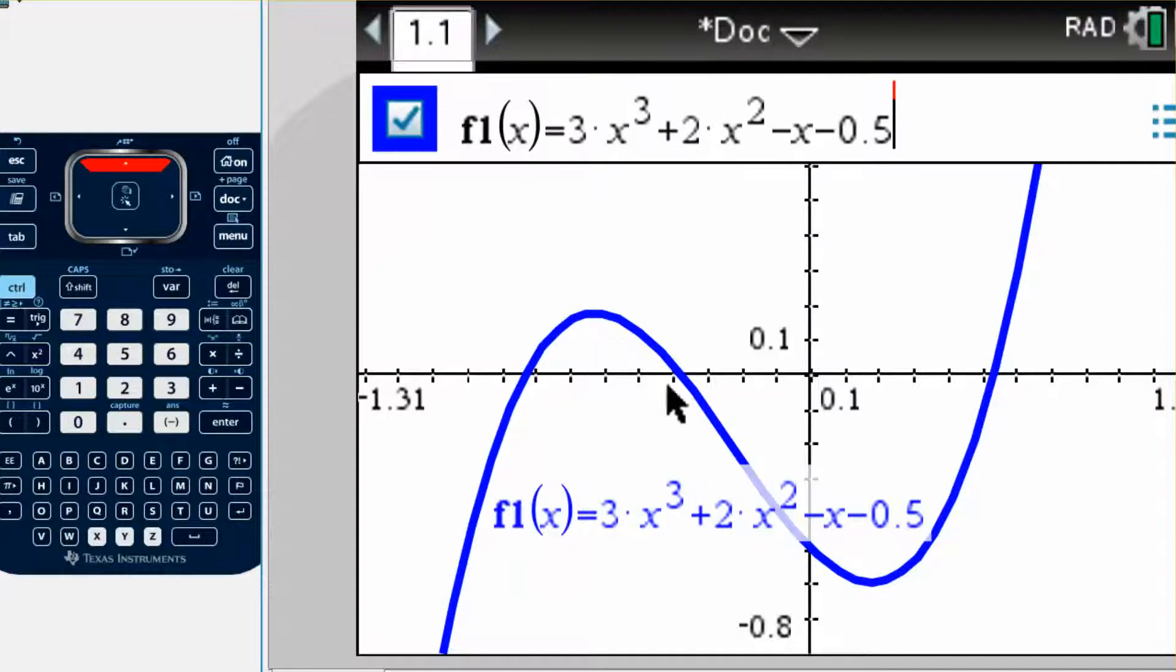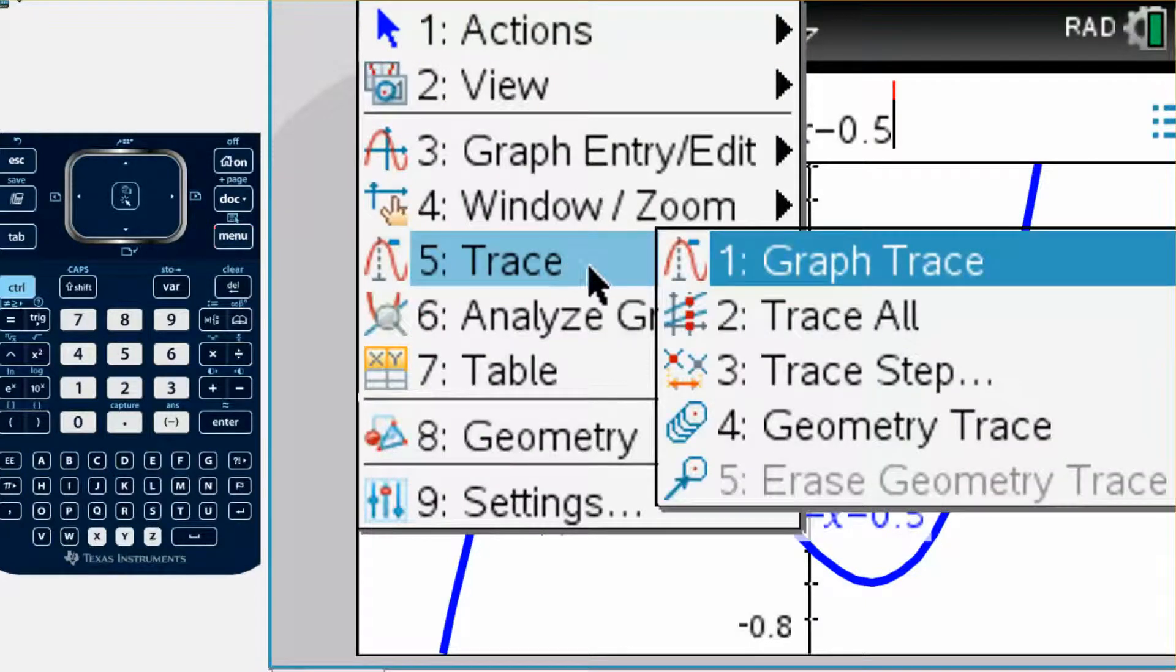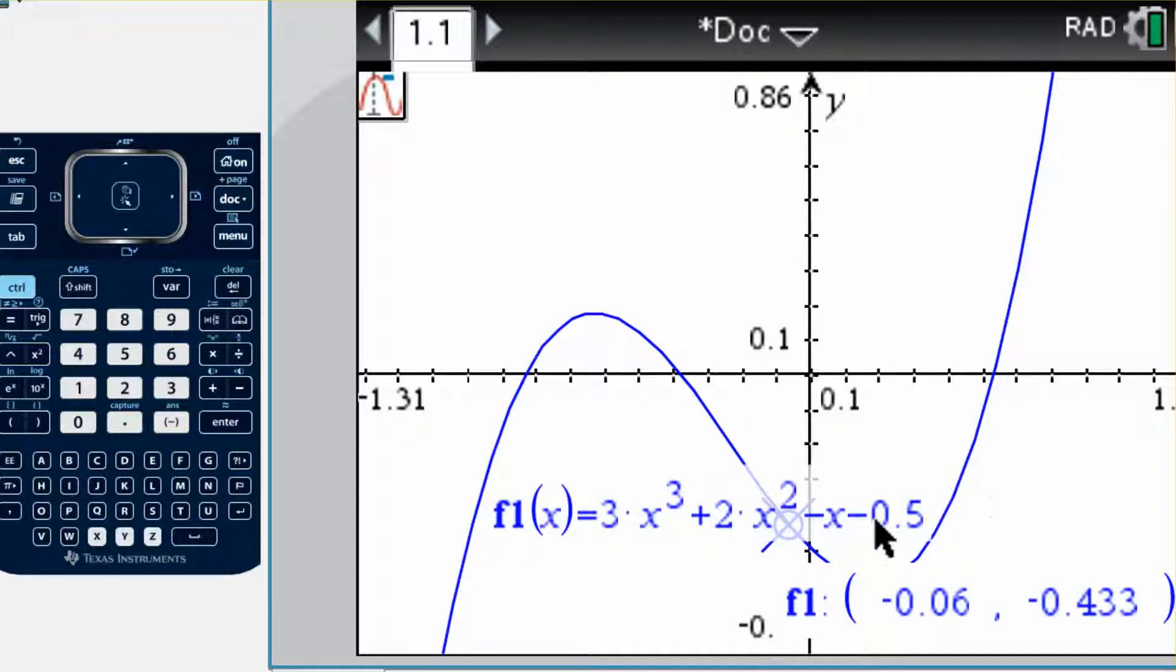Let's say that I want to find what the x-intercepts were on this graph. Probably the easiest way to do this is with the trace function. So what you're going to do is go to menu, then trace, and then graph trace.